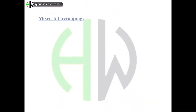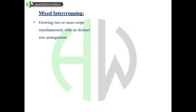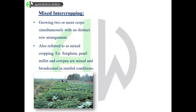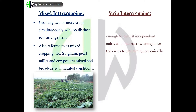In mixed intercropping, two or more crops are grown simultaneously with no distinct row arrangement — also referred to as mixed cropping. For example, sorghum, pearl millet, and cowpea are mixed and broadcasted in rain-fed conditions.